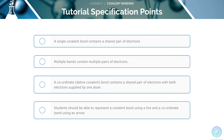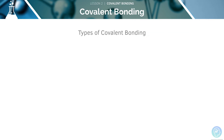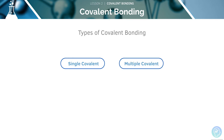Here are the AQA specification points for this lesson. Feel free to pause the video now and have a read through them before we begin. We'll start off by looking at the definition of a single covalent bond. There are three main types of covalent bonding we will cover in this video: single covalent bonding, multiple covalent, and dative covalent.